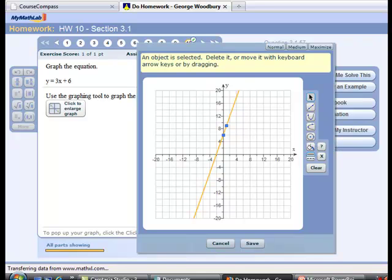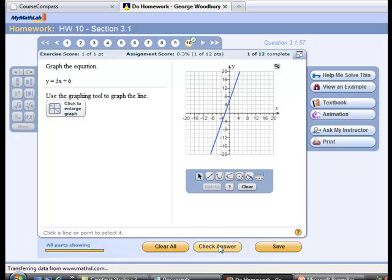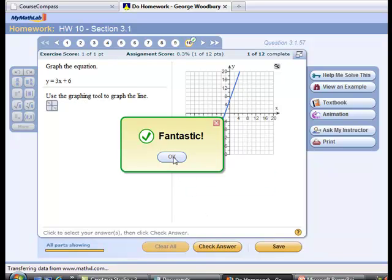Recall that my checkpoint was 2, 12, and I can tell from the graph that 2, 12 does lie on the line, so everything seems to be in order. I'm going to go ahead and save this. Check my answer. Fantastic. OK, let's move on to another example.